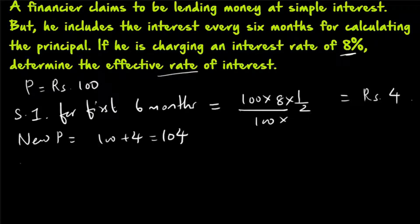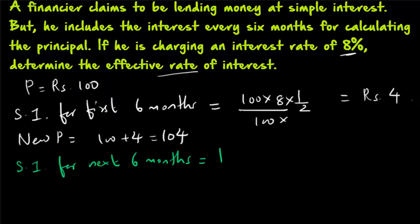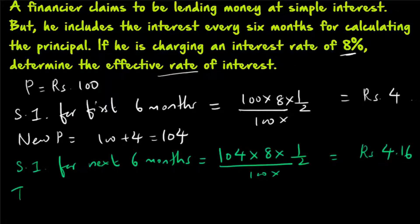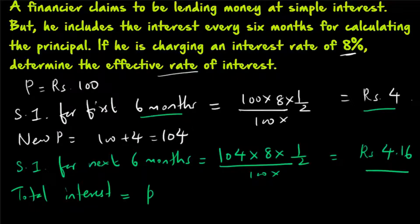Then we calculate the simple interest for the next 6 months. Simple interest for the next 6 months will be equal to new principal 104 into 8 into half, divided by 100, which gives rupees 4.16. So our total interest will be equal to the simple interest for the first 6 months plus the simple interest for the last 6 months, which is rupees 8.16. So the effective rate of interest is 8.16% per annum.